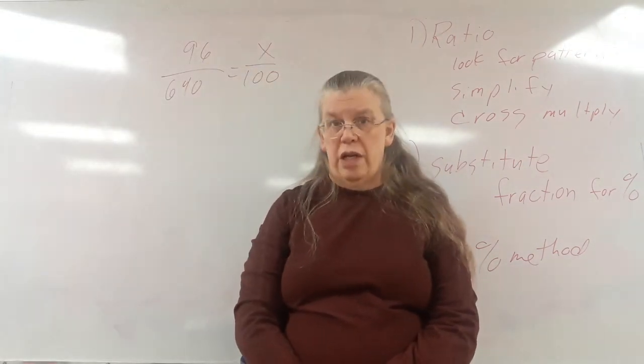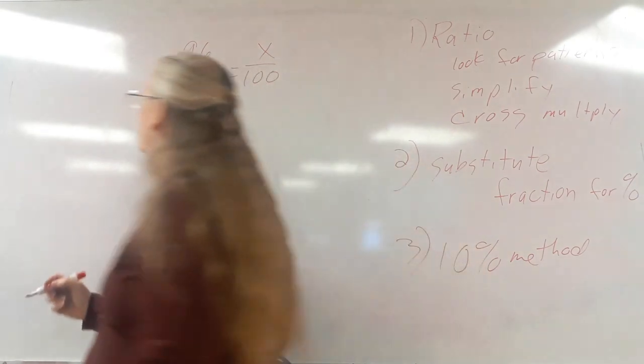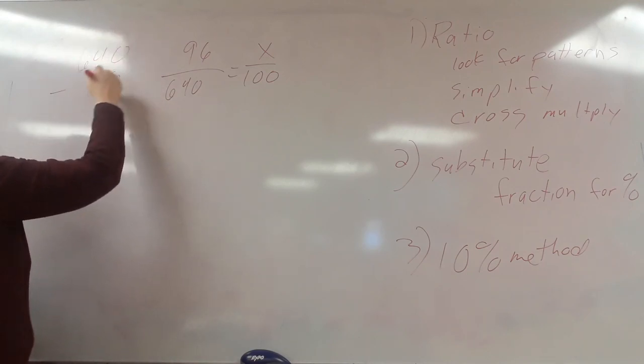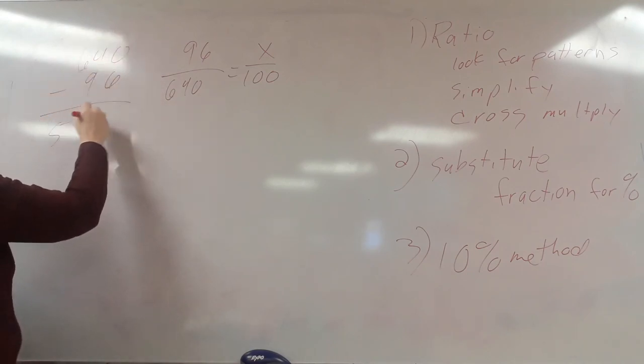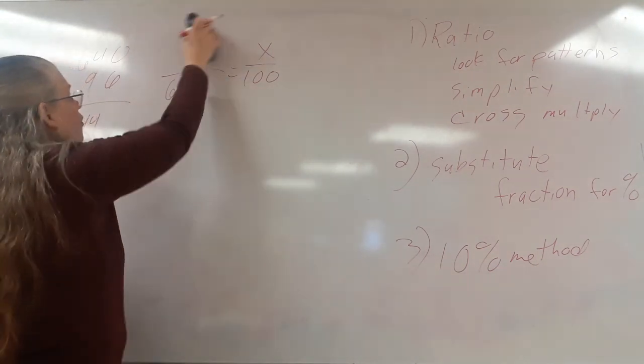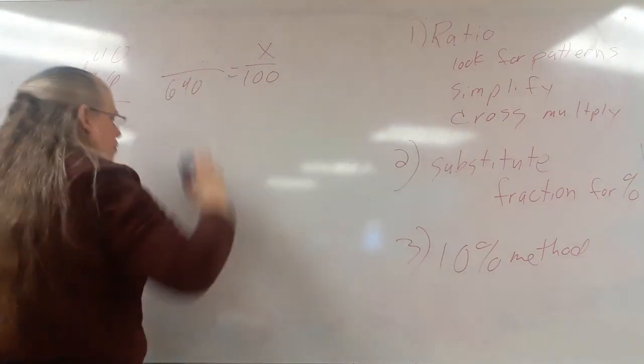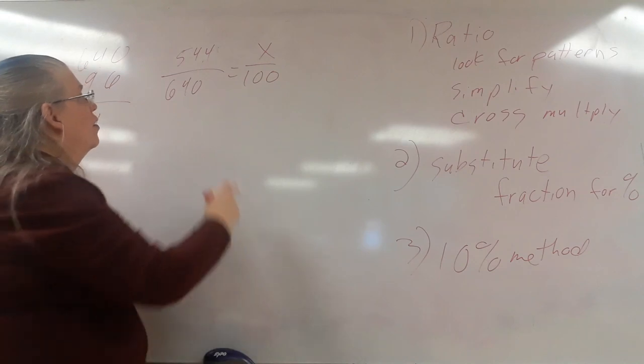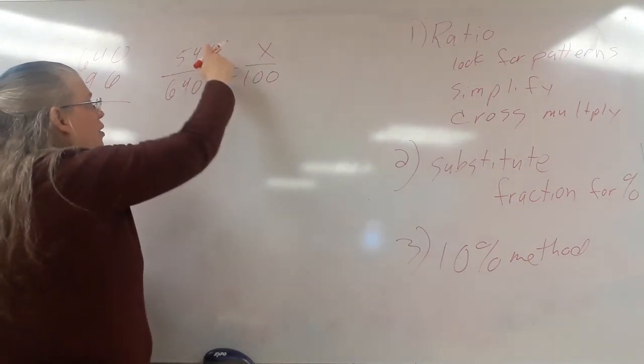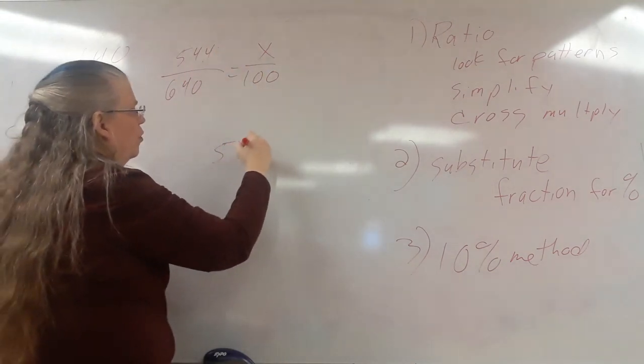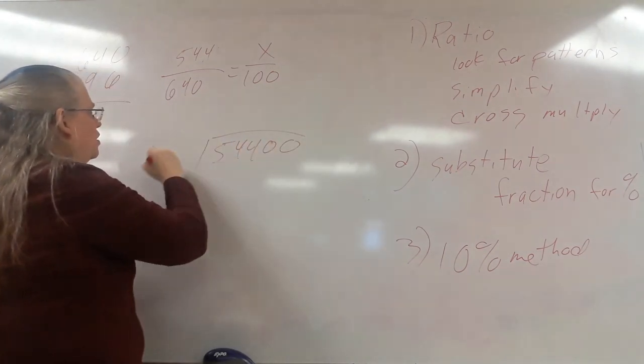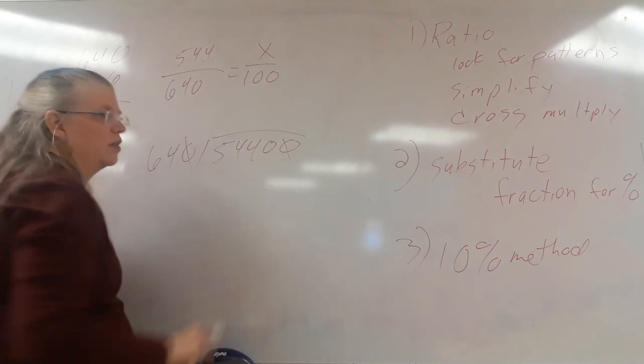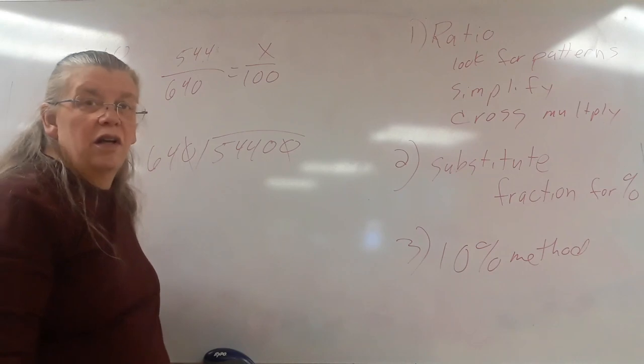If you had done this the standard way, 640 minus 96 is 544. So we would put 544 up here. Then there isn't any obvious pattern so we'd have to cross multiply. 54,400 divided by 640. Kill off a zero. So you'd have to divide 5,440 by 64. I don't want to do that.